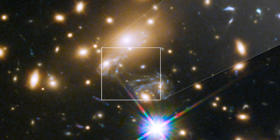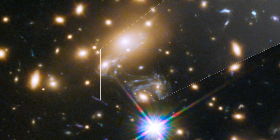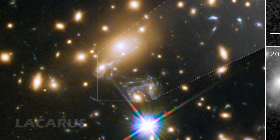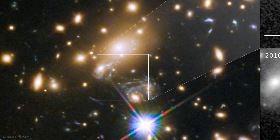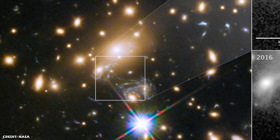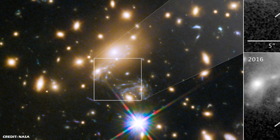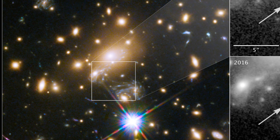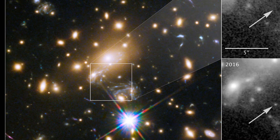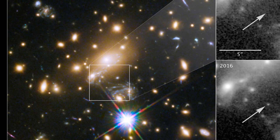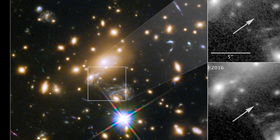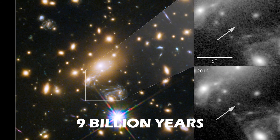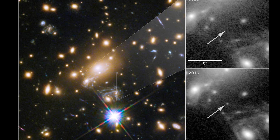More than halfway across the universe, an enormous blue star nicknamed Lazarus is the furthest individual star ever seen, thanks to gravitational lensing. Normally it would be much too faint to view even with the world's best telescopes, but due to gravitational lensing that tremendously amplifies the star's feeble glow, astronomers using the Hubble Space Telescope were able to pinpoint this faraway star and set a new distance record. The star, harbored in a very distant spiral galaxy, is so far that it has taken light 9 billion years to reach Earth — appearing to us as it did when the universe was about 30% of its current age.